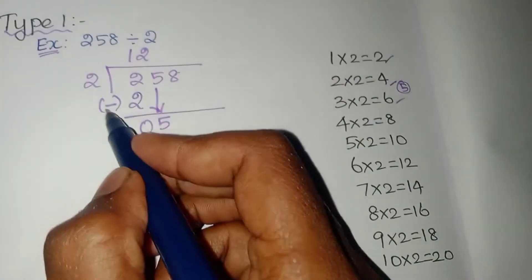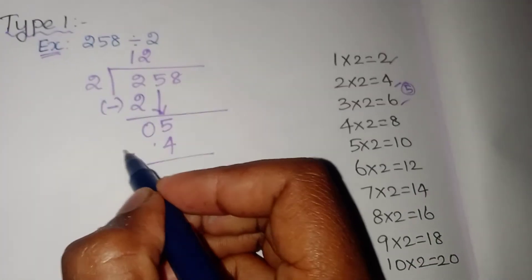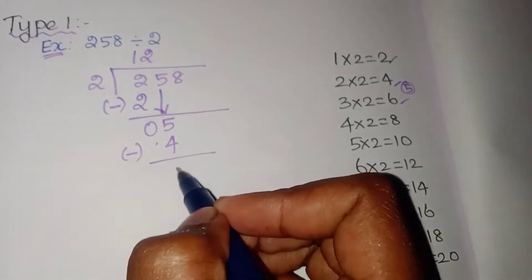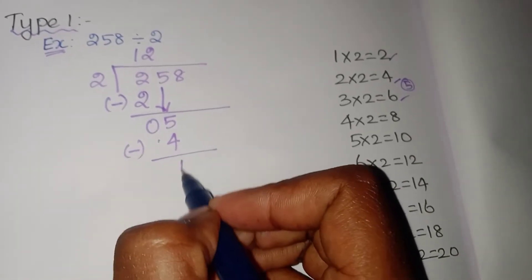Next step is subtraction. You have to subtract these two numbers. 5 minus 4 equals 1.